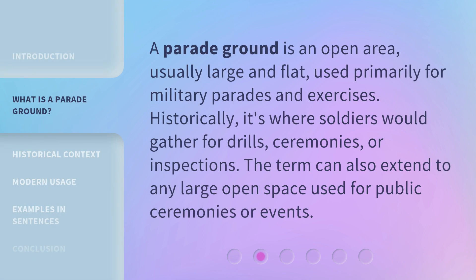A parade ground is an open area, usually large and flat, used primarily for military parades and exercises. Historically, it's where soldiers would gather for drills, ceremonies, or inspections. The term can also extend to any large open space used for public ceremonies or events.